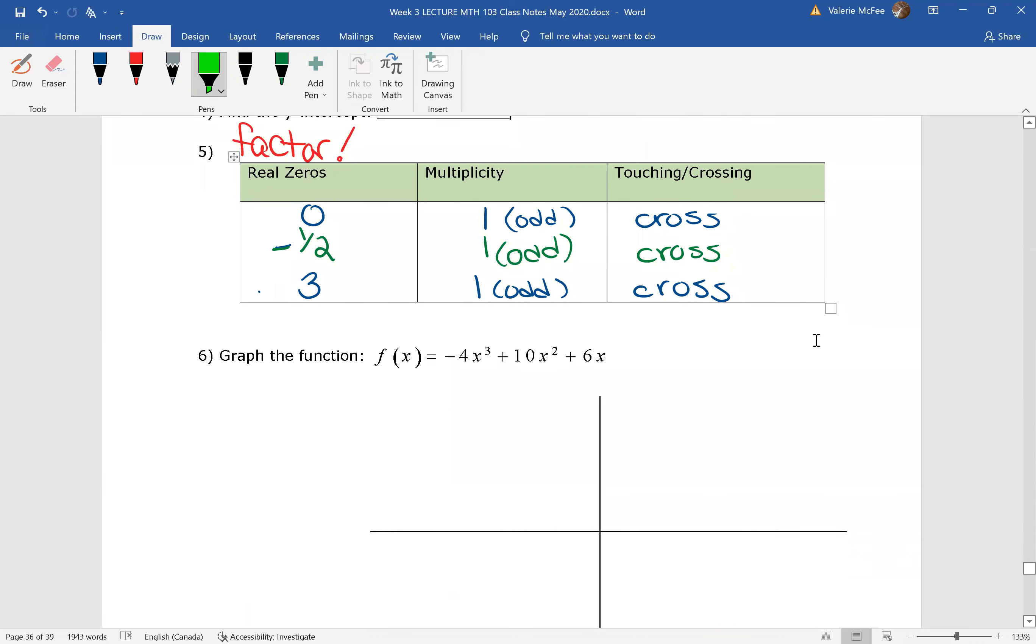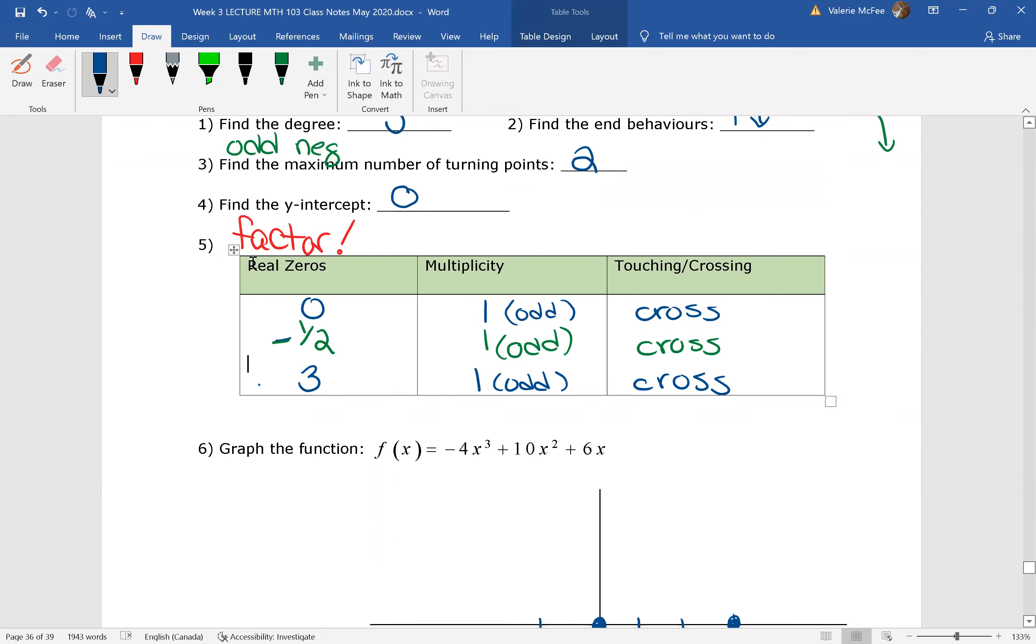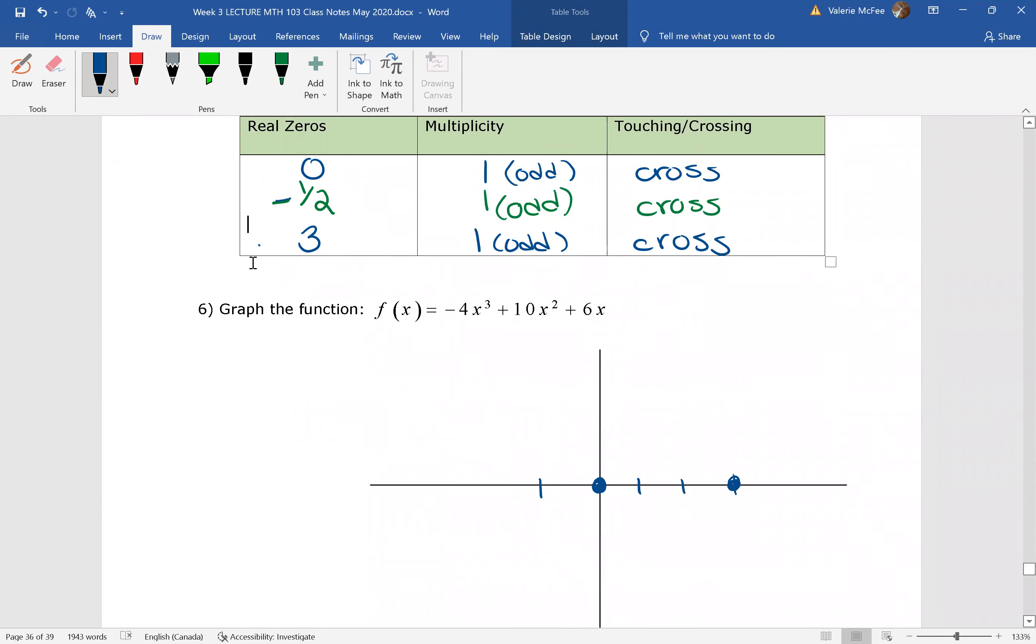So let's put those real zeros onto our graph. We have 1 at 0, and since they're all crossing, I don't need to mark it this time. 1 at positive 3, and 1 at negative 1 half. The end behaviors. What were the ends doing? Rising on the left, falling on the right. From the outside, rising on the left, falling on the right, and they're all crossing. It worked out beautifully.